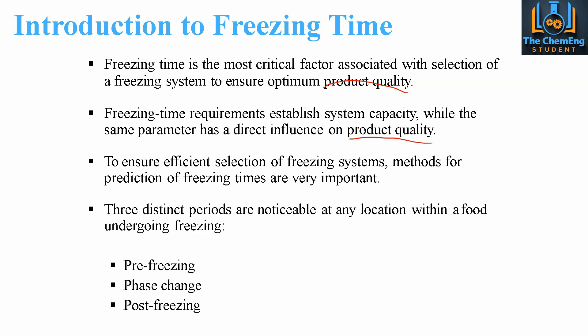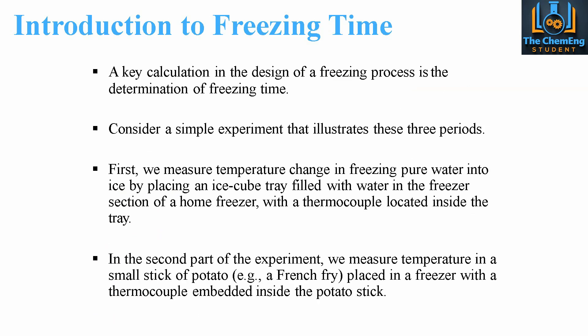There are three distinct periods that we'll see on the graph associated with a food which undergoes freezing: we have the pre-freezing stage, we have the phase change, and then we have the post-freezing. Each has its own separate characteristics and its own distinct location within the freezing graph. A key calculation in the design of freezing processes is the determination of the freezing time — one of the most important things for us as chemical engineers when we design these systems.